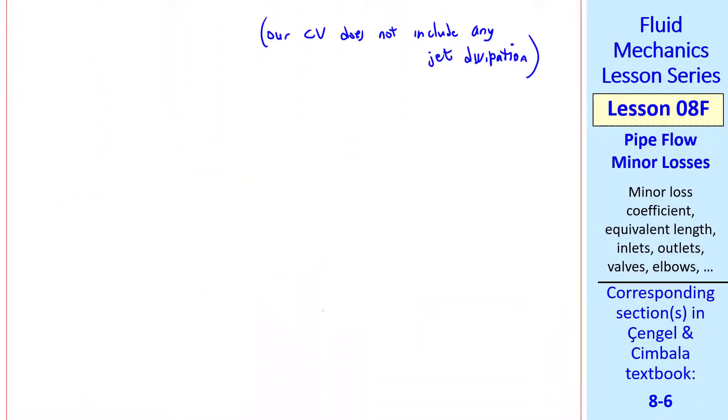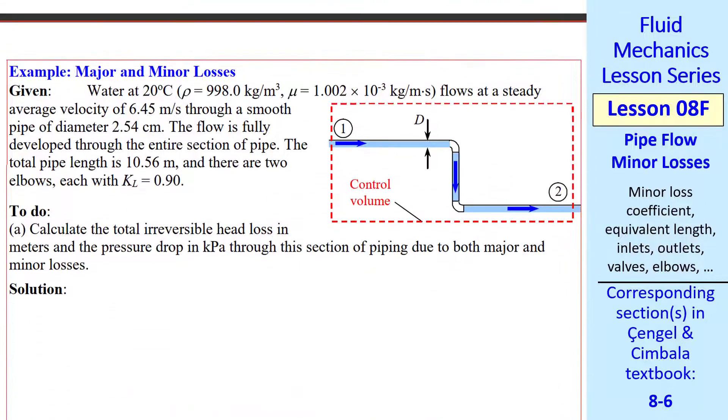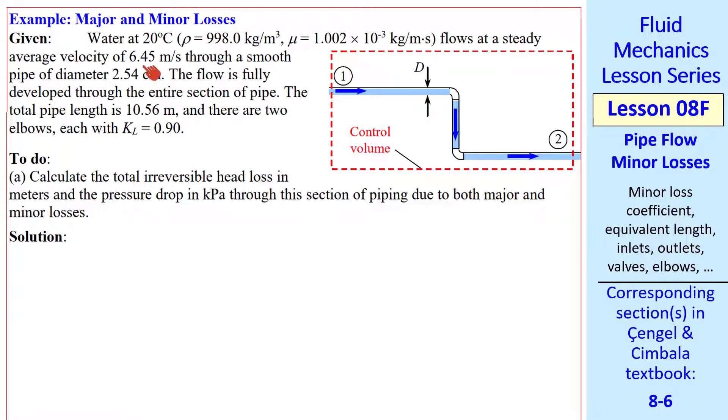Now we're ready for some example problems. I'll do two. For this one, we have water at 20 degrees flowing at some speed through a pipe of given diameter and length, and we have two elbows each with KL equal 0.90.